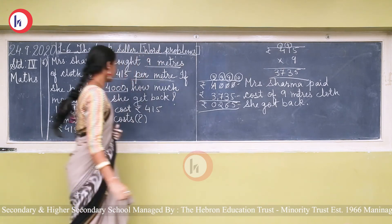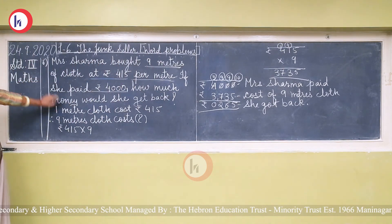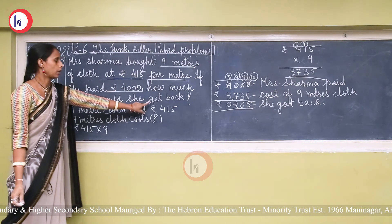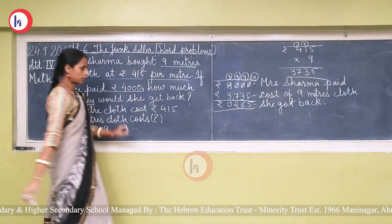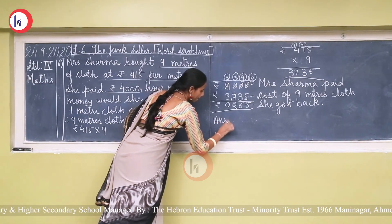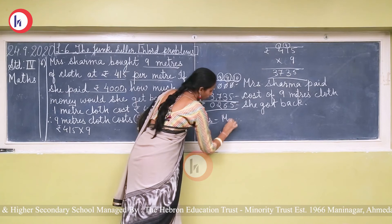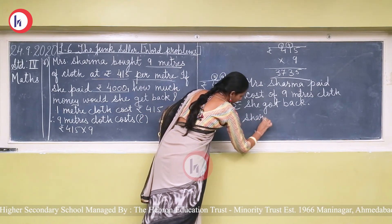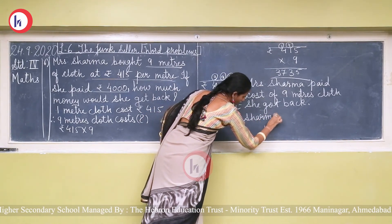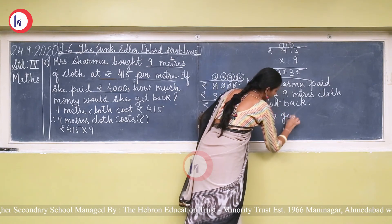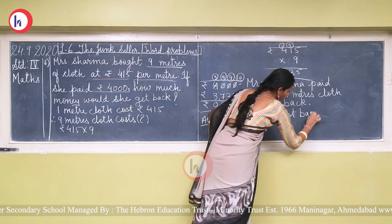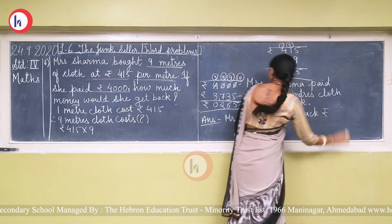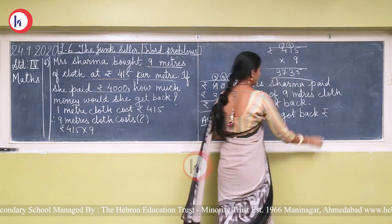The question asks how much money Mrs. Sharma would get back. Answer: Mrs. Sharma got back rupees two hundred and sixty-five.